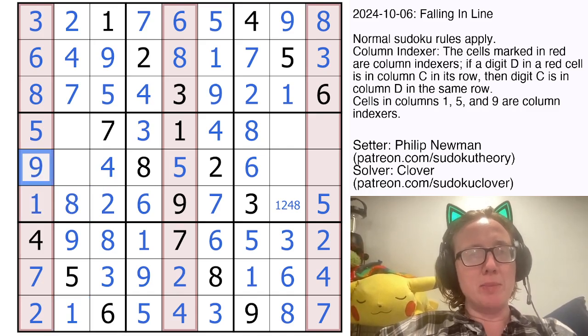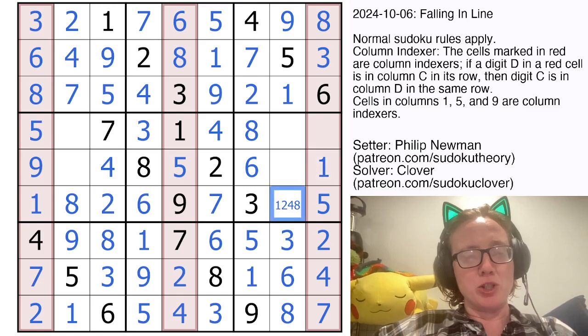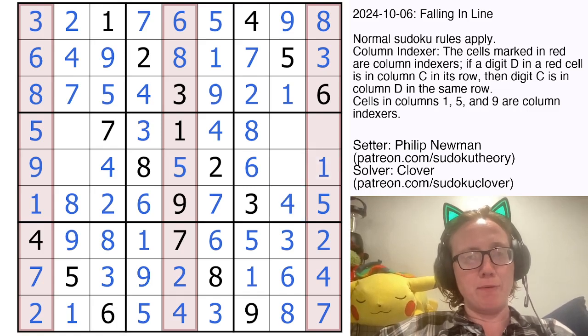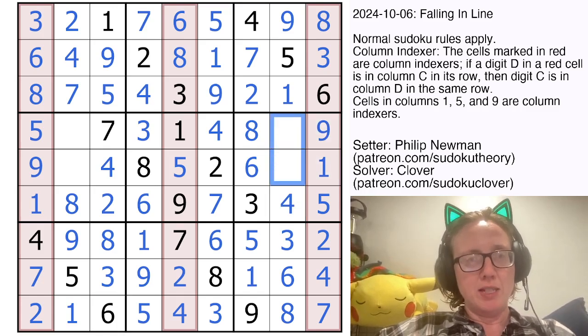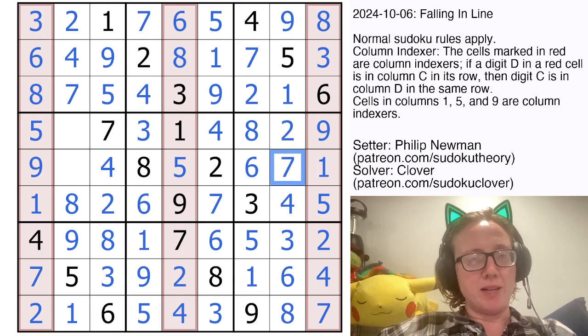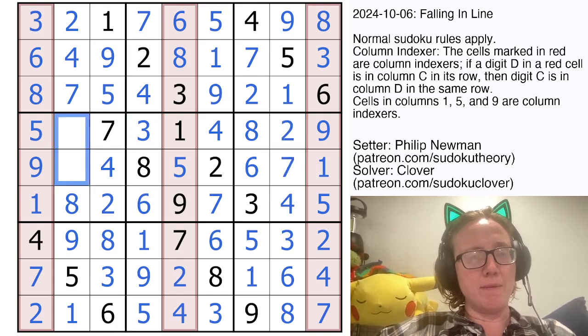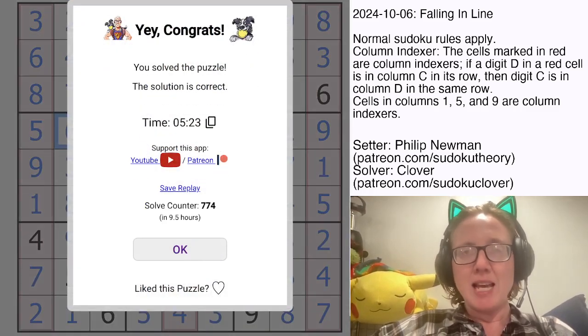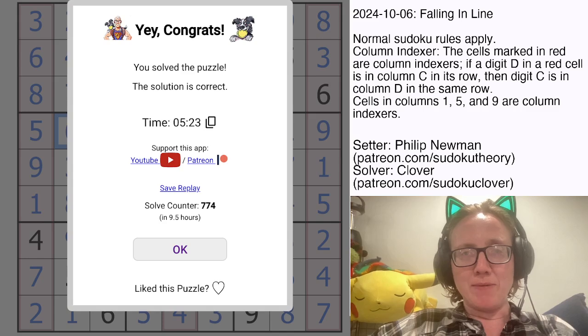My one remaining digit in this column is a nine. So nine is in the first position and I can index that. Get that four by Sudoku right there. This is a nine, which is indexing itself. I need to place a two and a seven to finish this column. And to finish this region slash column, I need a three and a six. And that's how you solve Philip Newman's Falling in Line.